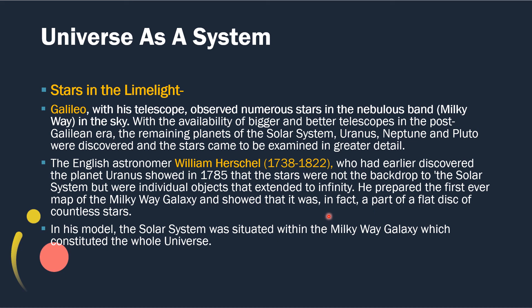Herschel prepared the first ever map of the Milky Way galaxy and showed it was a flat disk of countless stars with a bulge in the center. In his model, the solar system was situated within the Milky Way galaxy, which constituted the whole universe. Things got clearer with improved telescopes and observatories, and later developments made the universe model much clearer.